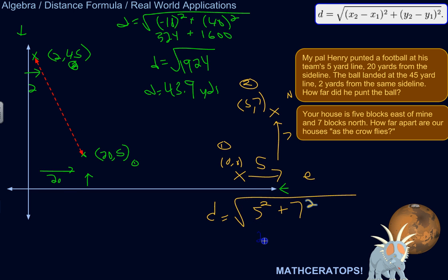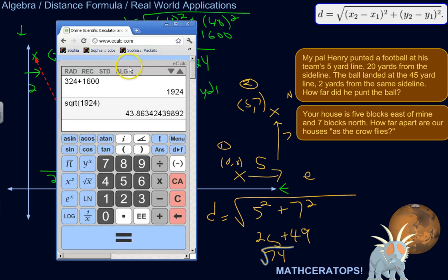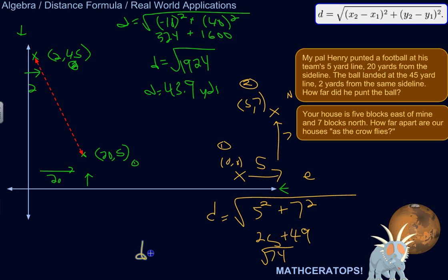So five squared is 25, seven squared is 49, and then this would be 74. 25 plus 50 is 75, 25 plus 49 would be 74. So we want the square root of 74. Square root of 74. 8.6 and some change. The distance between our houses is 8.6 blocks.